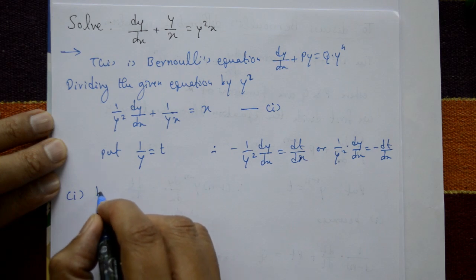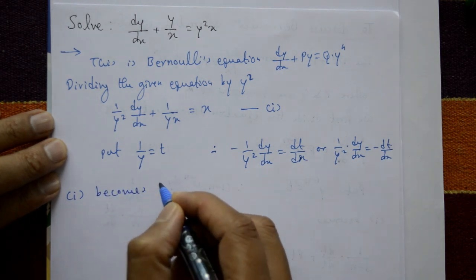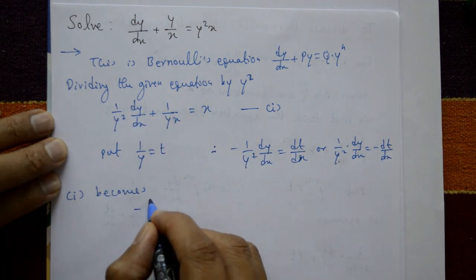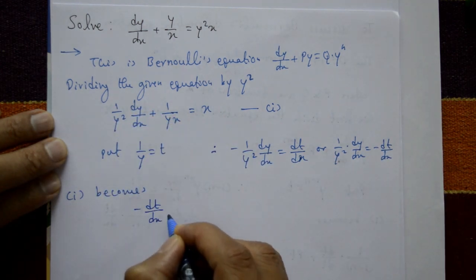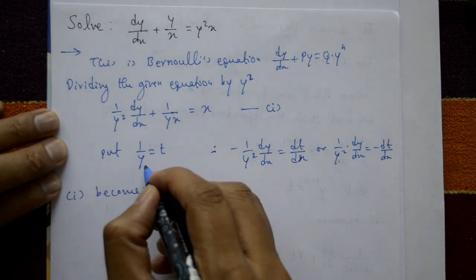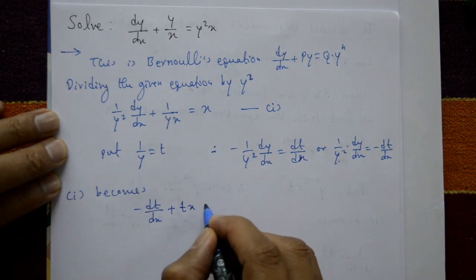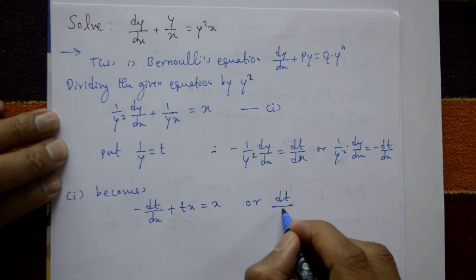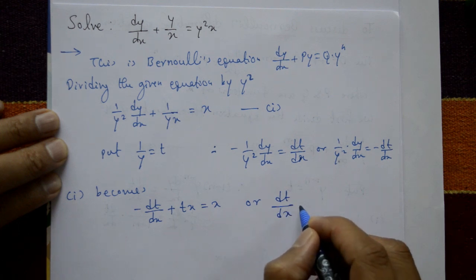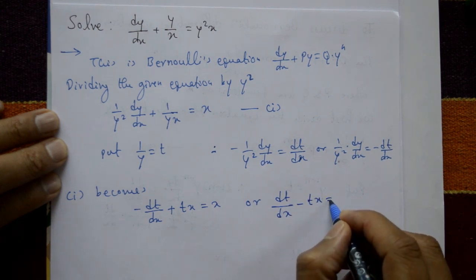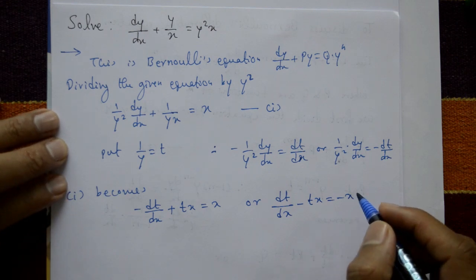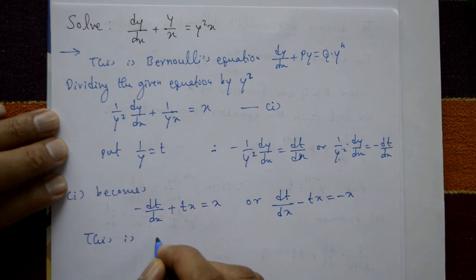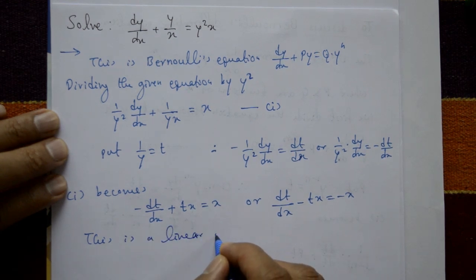Now substitute this result in equation number 1: (1/y²)·dy/dx is -dt/dx, plus 1/y means t, so t/x = x. Changing sign: dt/dx - t/x = -x. Now this is a linear equation.